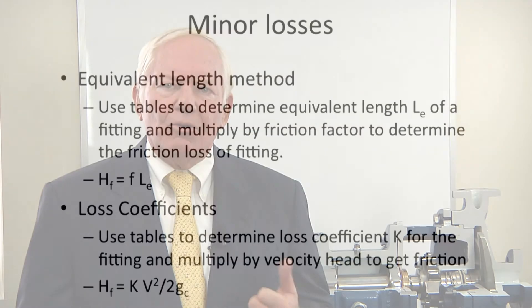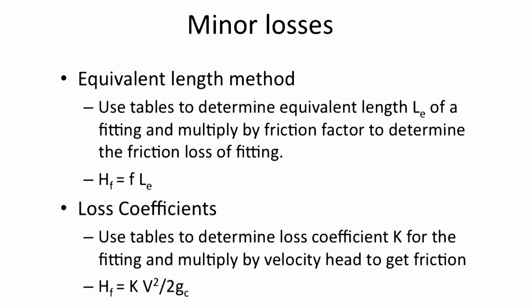There are two popular methods for determining minor losses. One is using equivalent lengths. The other is using velocity heads and loss coefficients. For equivalent lengths, we use published tables to find the equivalent length of the fitting as if it were a straight piece of pipe. These equivalent lengths are then added to the straight pipe length and then used with the friction factor to find the total friction loss. The other method is to determine the velocity head of the fluid, that's v squared over 2g sub c, and then multiply it by the published constant k for the particular fitting.